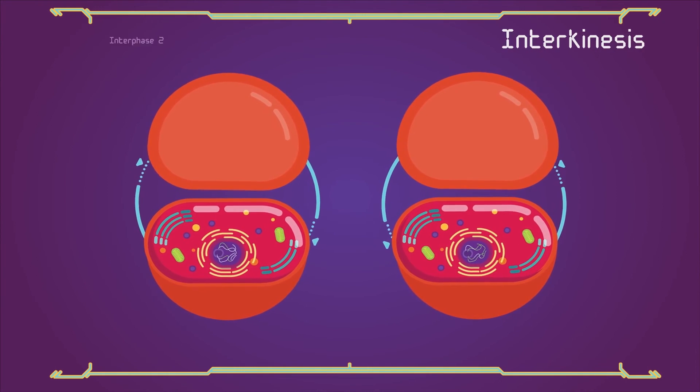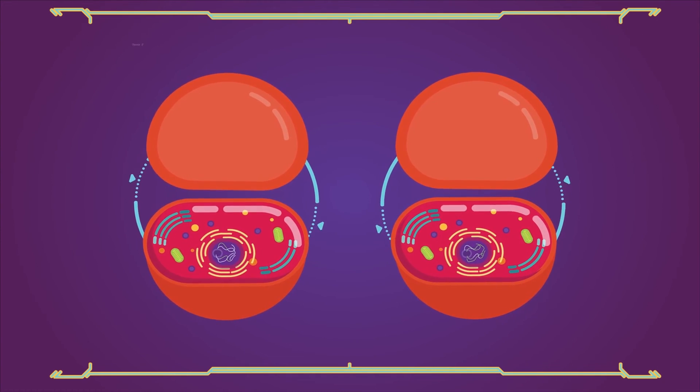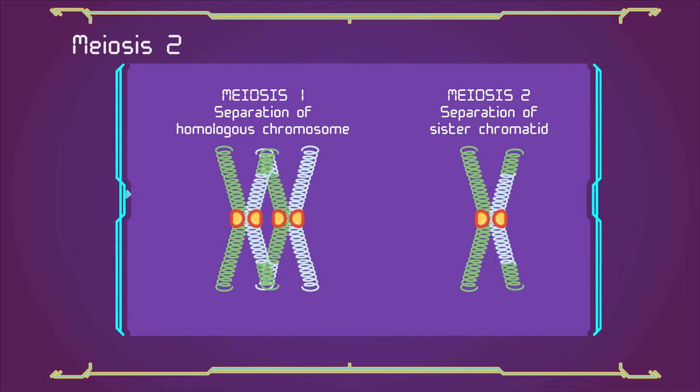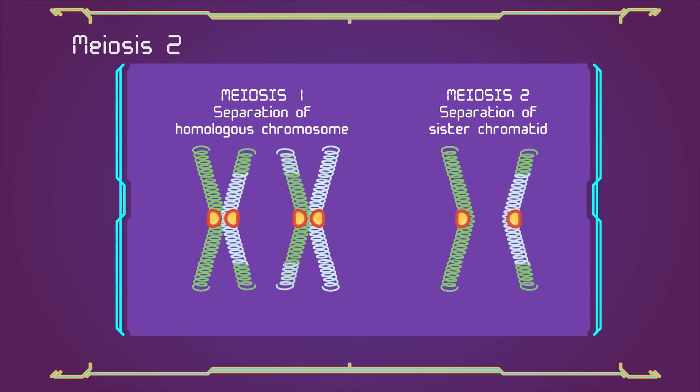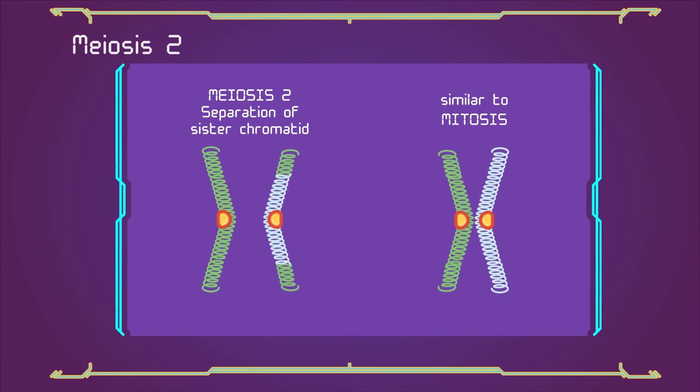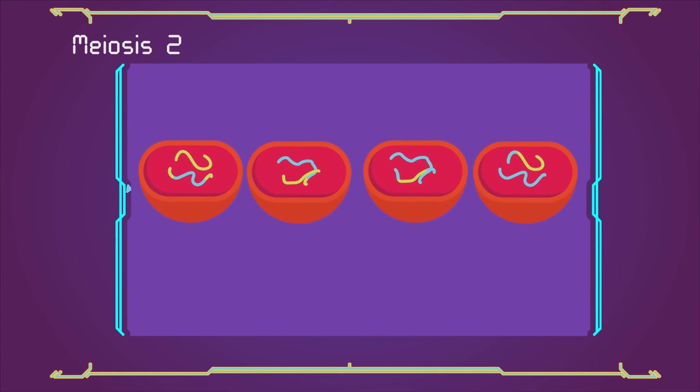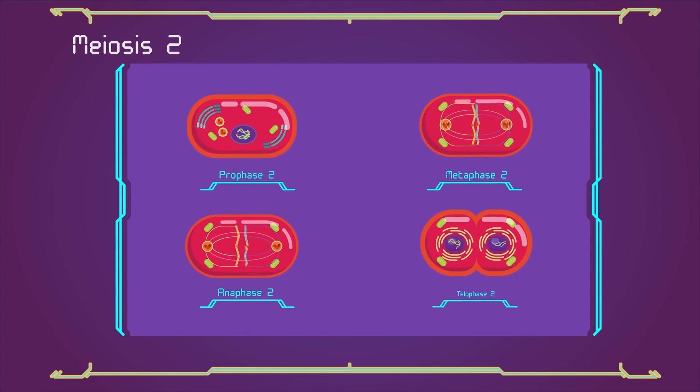Meiosis 2: meiosis 2 is the second meiotic division and usually involves equational segregation or separation of sister chromatids. Mechanically, the process is similar to mitosis, though its genetic results are fundamentally different. The end result of meiosis 2 is production of four haploid cells (n chromosomes, 23 in humans). The four main steps of meiosis 2 are prophase 2, metaphase 2, anaphase 2, and telophase 2.